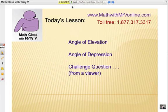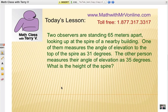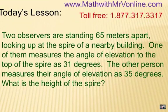All right, here is the question: Two observers are standing 65 meters apart, looking up at the spire of a nearby building. One of them measures the angle of elevation to the top of the spire as 31 degrees. The other person measures their angle of elevation as 35 degrees. What is the height of this spire? And I should note that these two people are standing on opposite sides of the spire, so they're 65 meters apart, and this spire of the building, which is a tower, is in the middle in between. All right, here's an example of what it would look like.